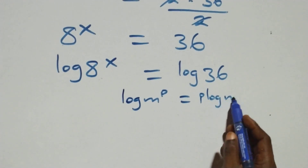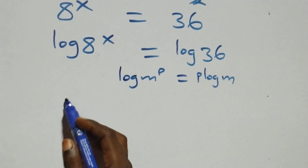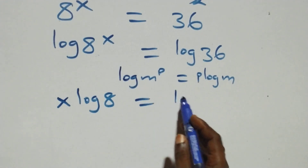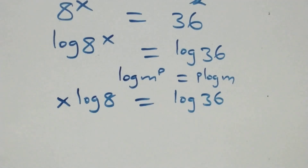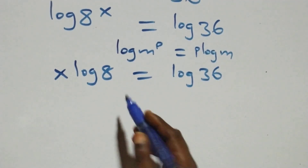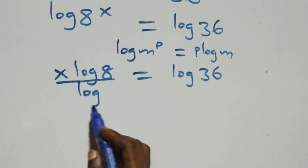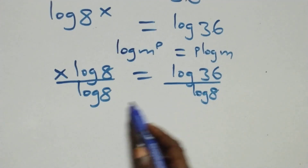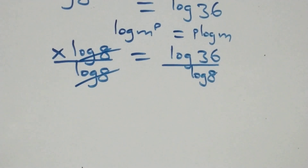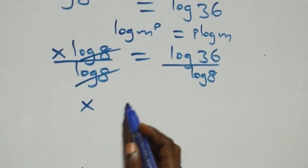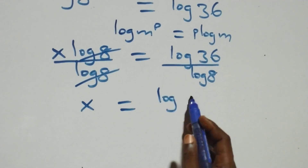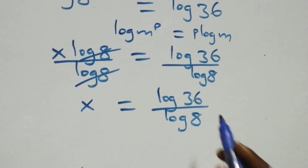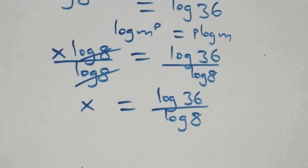What we have becomes x log 8 equals log 36. We divide both sides by log 8 — log 8 cancels each other — and we have x equals log 36 over log 8.